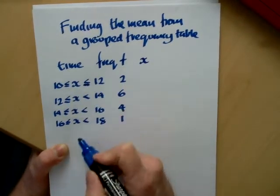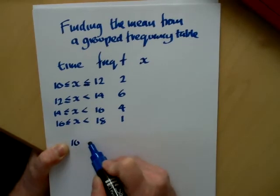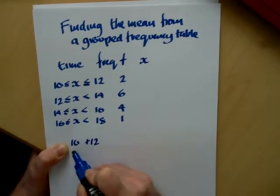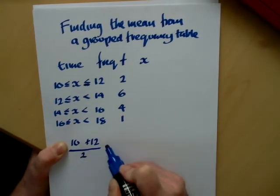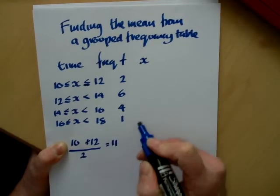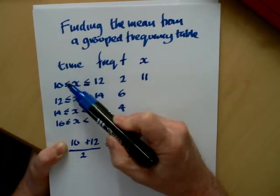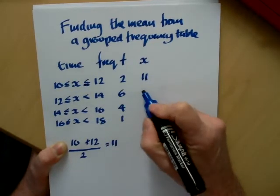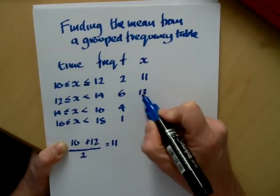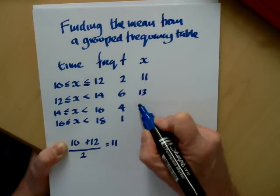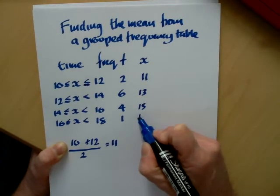Now the midpoint of 10 and 12 can be found by doing 10 plus 12 divided by 2. We'll see that that comes to 11. Now you might have realized that 11 also was halfway between 10 and 12. So our next midpoint will be 13, the next midpoint will be 15, and the next midpoint will be 17.